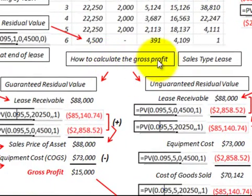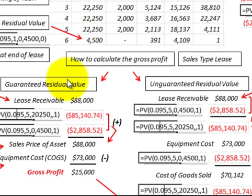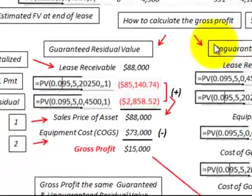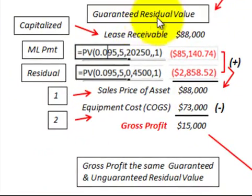Now we'll look at how to calculate the gross profit on the sales-type lease. There are two different scenarios: we have to look at the guaranteed residual value versus the unguaranteed residual value.